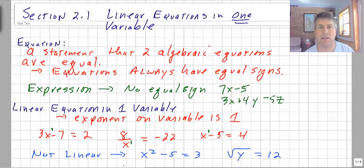Some things that are not linear, some examples of nonlinear equations: x squared minus 5 equals 3, and the square root of y equals 12. The square root of y, that's not y to the first power. And certainly x squared, that's x to the second power. You guys might know that as a parabola.